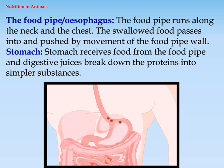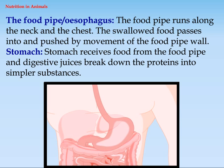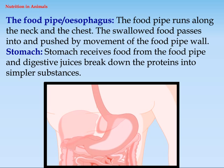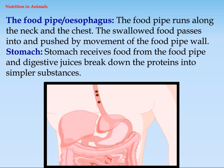The food pipe or esophagus runs along the neck and the chest. The swallowed food passes into it and is pushed by movement of the food pipe wall.